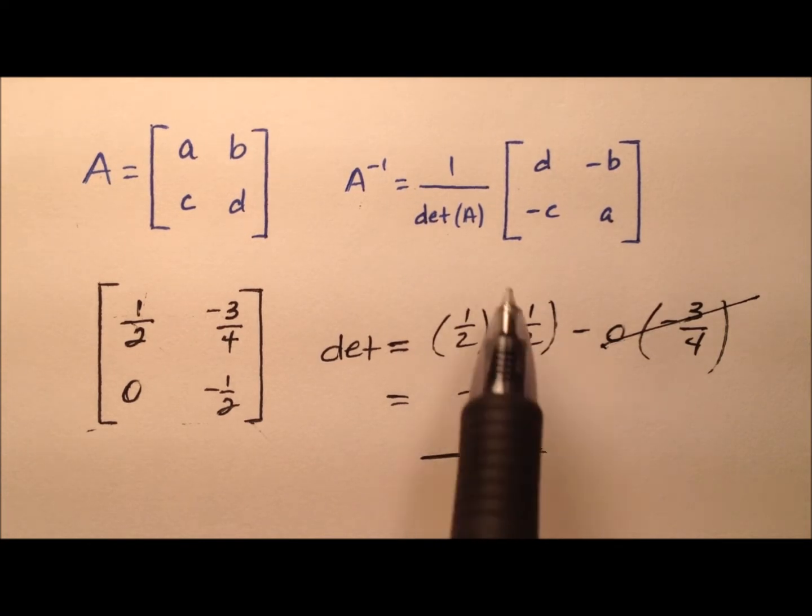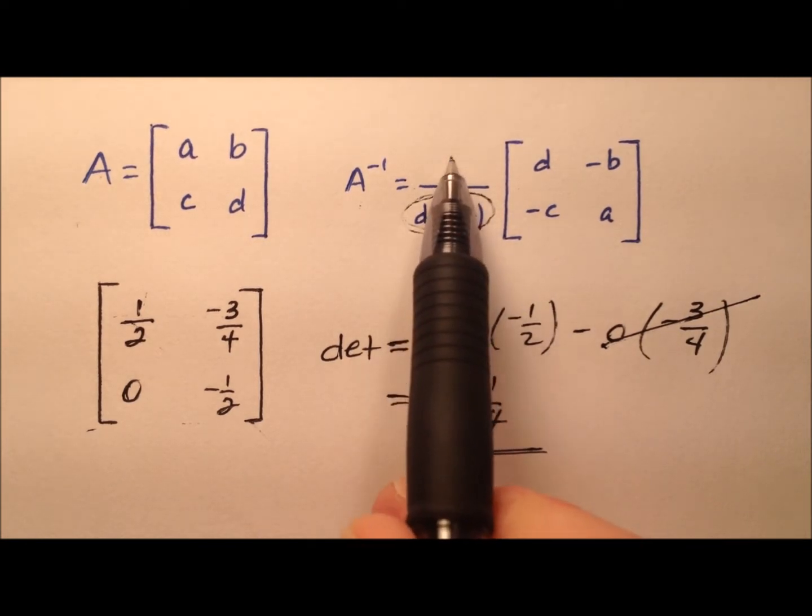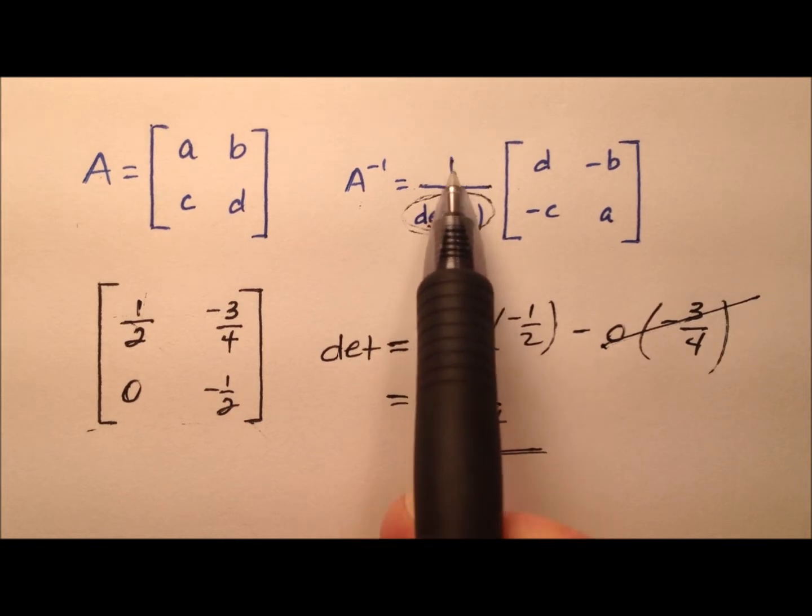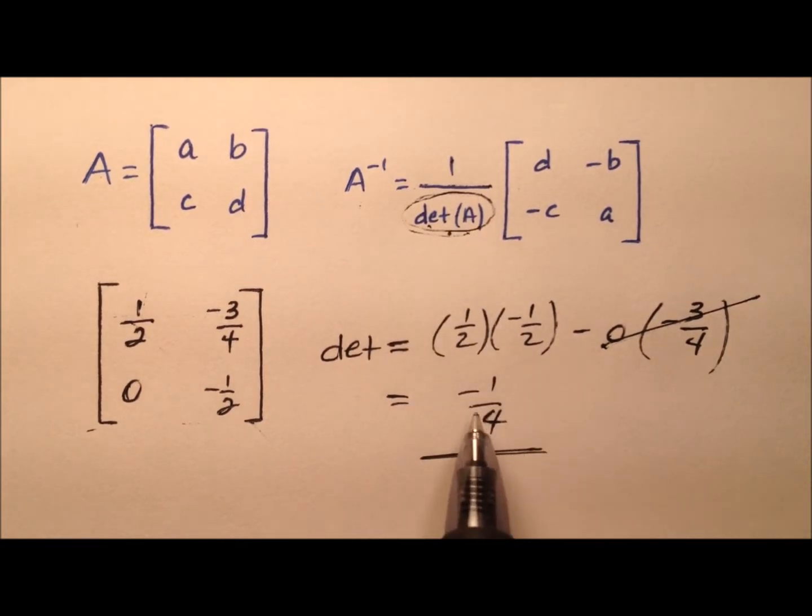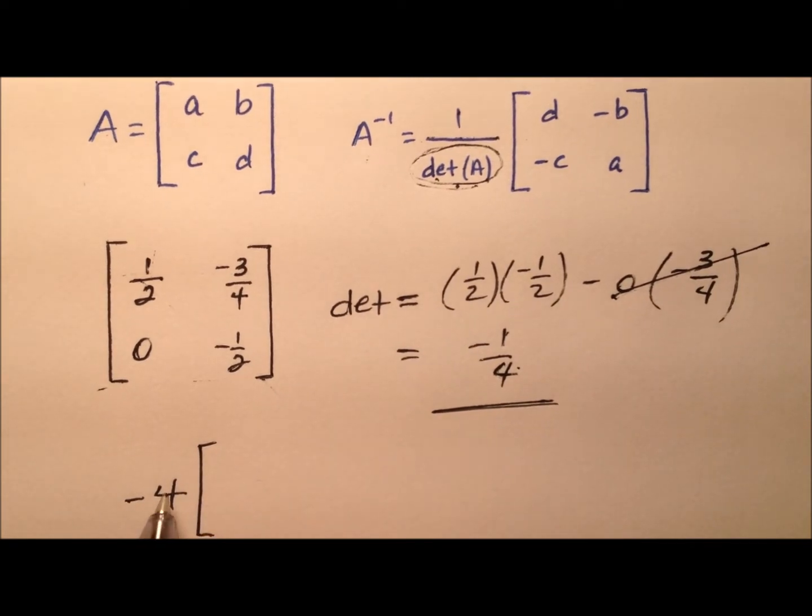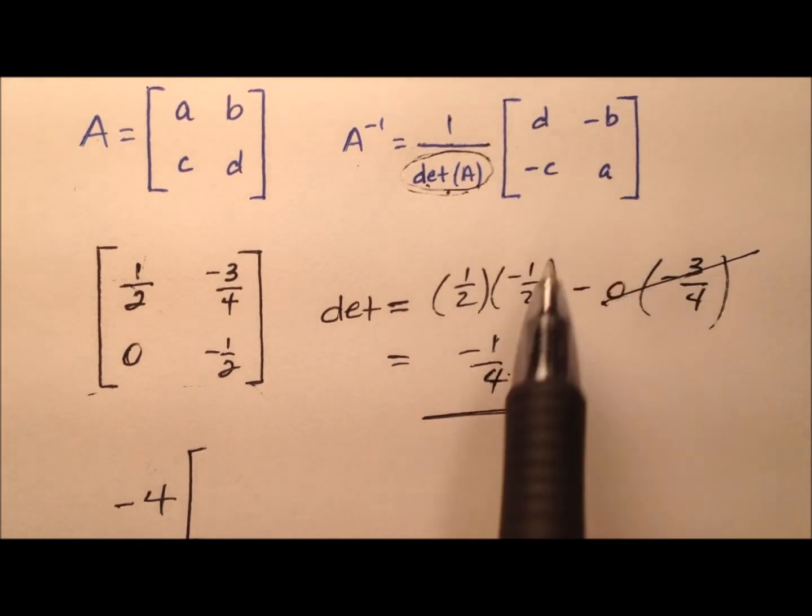So what are we going to do with this negative 1/4? We're going to drop it right here into where it says the determinant of A. So 1 over the determinant. Well, that's really the reciprocal, right? So 1 over negative 1/4. The reciprocal of negative 1/4 will be negative 4. And so we'll use this as a scalar product, and we're going to multiply that through by these entries, but we need to do a little bit of manipulation first.